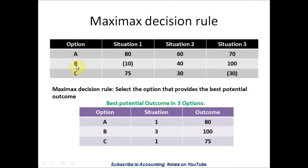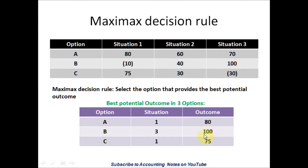Let's look at Option B. Situation 1 is a loss of $10, Situation 2 is a profit of $40, and Situation 3 is a profit of $100. So the best potential outcome for Option B is $100 — that's Option B, Situation 3 at $100.